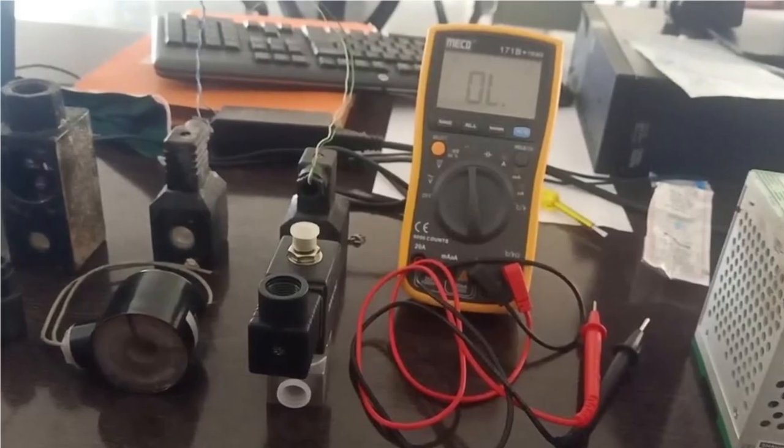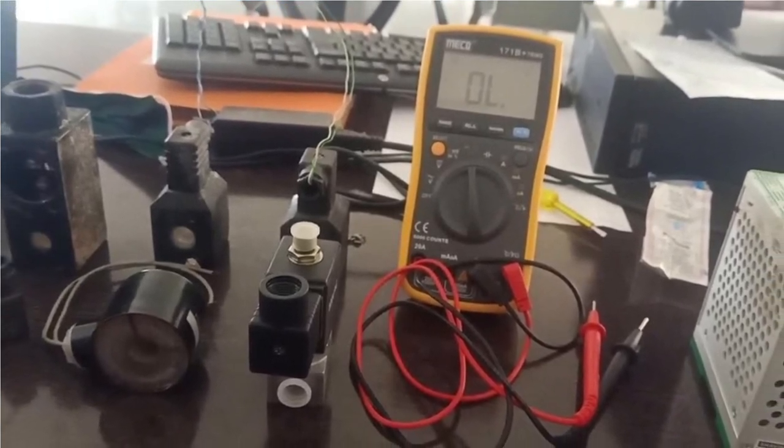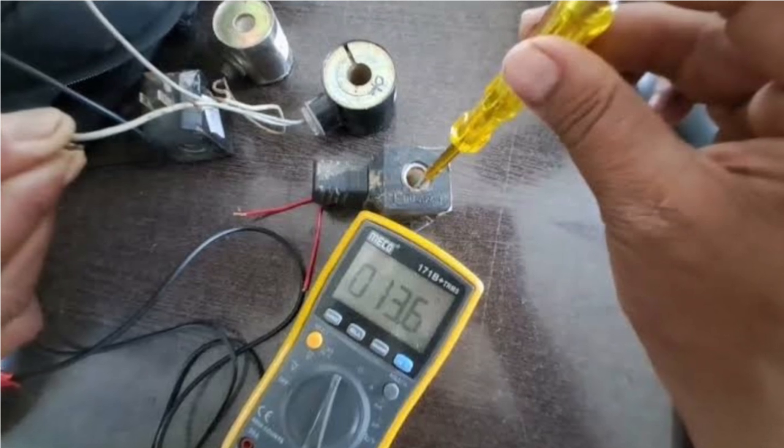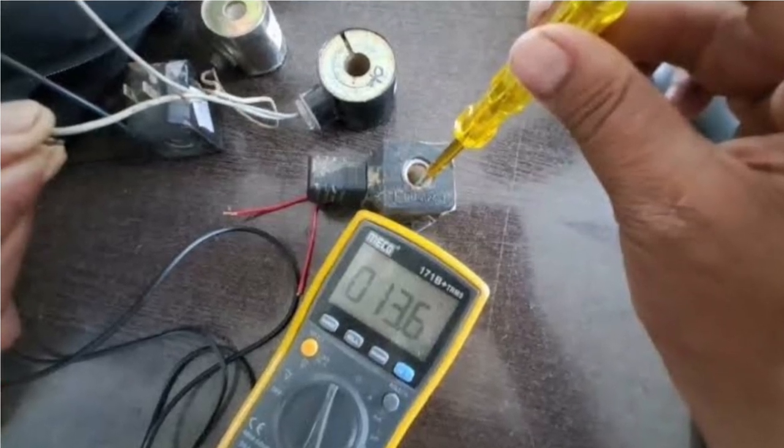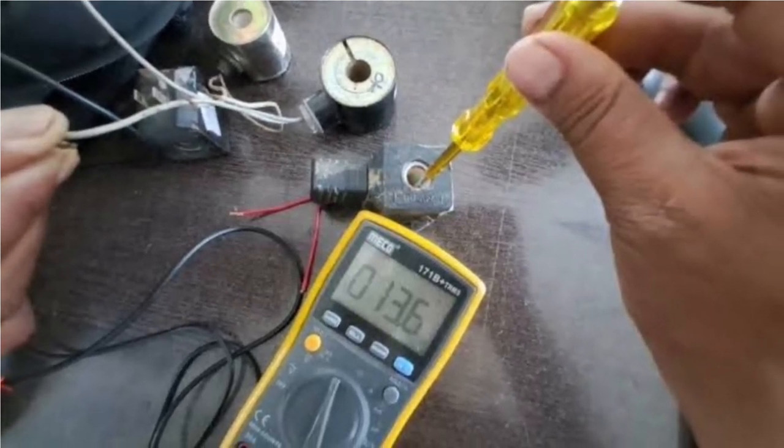Testing the coil of the solenoid valve can also be conducted with a multimeter. Power on the solenoid valve, take off the connector plug, and use the multimeter to test whether there is power or not.